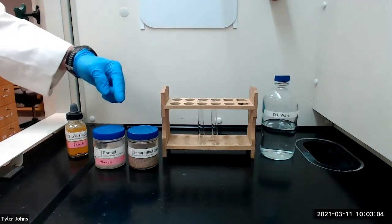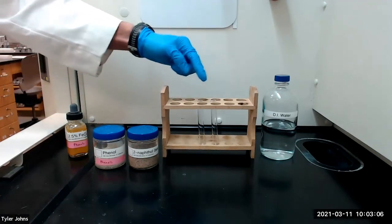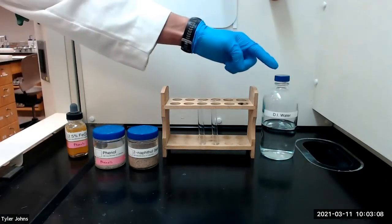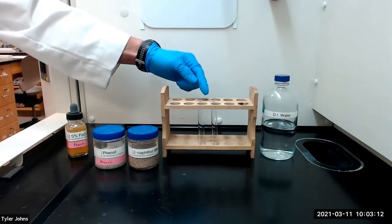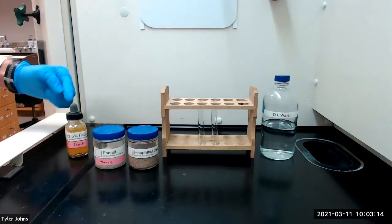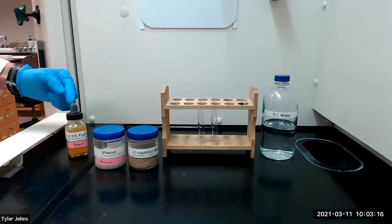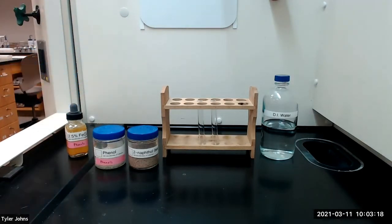We will begin by adding a small amount of the test compounds to separate test tubes. We'll then add one milliliter of deionized water to each test tube and mix with a micro spatula. We'll then add several drops of 2.5% aqueous ferric chloride solution.